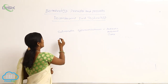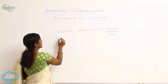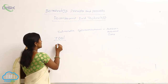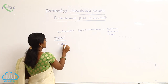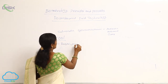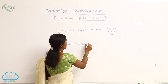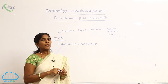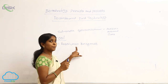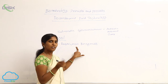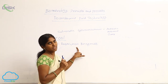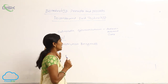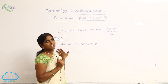Coming to the tools of RDNA technology — the basic tools include, first, restriction enzymes. Restriction enzymes are the most important enzymes for RDNA technology. The study of RDNA technology grew greatly after the discovery of restriction enzymes. The scientist Nathan discovered restriction enzymes in the 1980s.